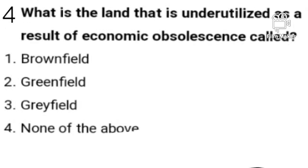Question number four. What is the land that is underutilized as a result of economic reasons called? Option A: Brownfield. Option B: Greenfield. Option C: Grayfield. Option D: None of the above. Option C is the correct answer. Grayfield is the land that is underutilized as a result of economic reasons.